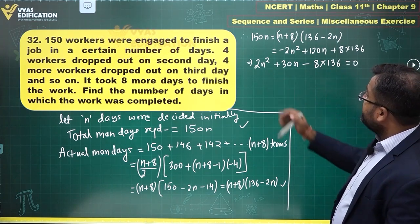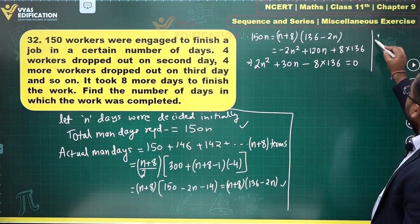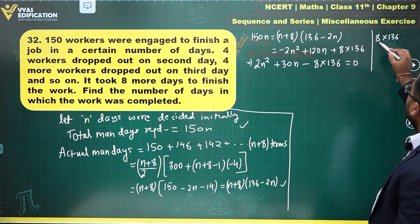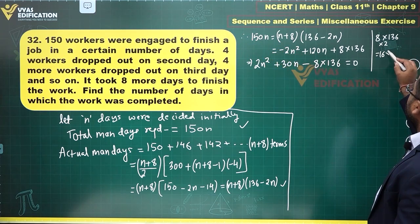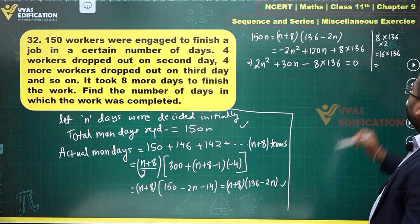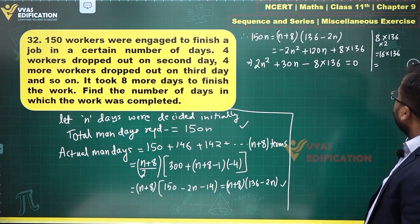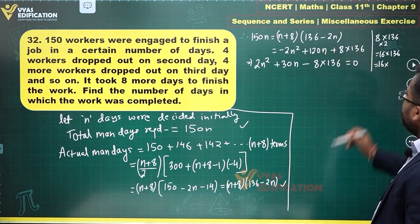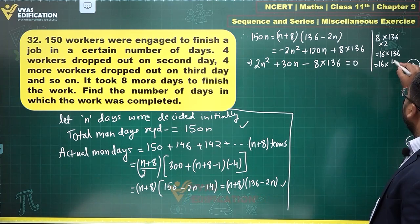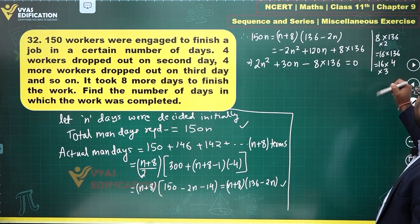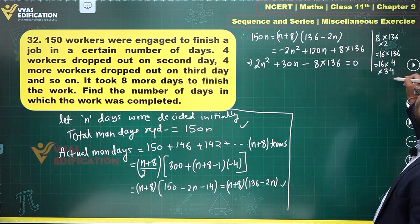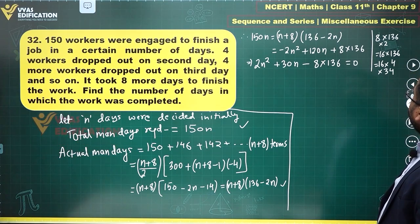Now I want to factorize 8 into 136 into 2. Factorize this. 8 into 136 into 2, which is 16 into 136. 136 can further be factorized as, let us write 16 as it is. 136 can be divided by 4 and this becomes 34. This is what you are getting.